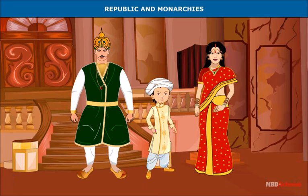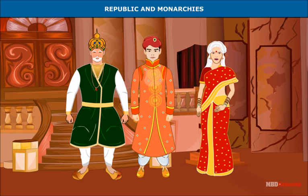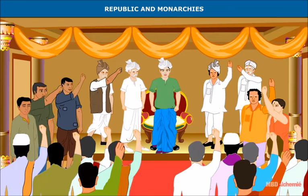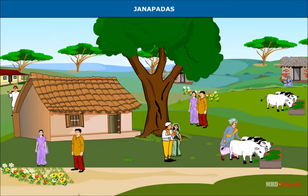A monarchial system was one in which there was a ruler — a monarch who was the king, no matter what his actual title was. In the early period the post of king was not hereditary, but gradually it became hereditary. A republic system, on the other hand, did not have an absolute ruler such as a king; it was governed by a group of people.